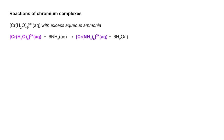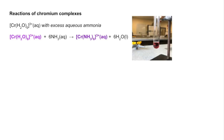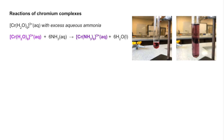The second reaction we'll look at is for a chromium complex — the hexa aqua chromium 3+ ion with an excess of aqueous ammonia. You can see from the equation that all six of the water ligands have been substituted by ammonia ligands. The hexa aqua chromium 3+ ion is violet in colour, and the hexa amine chromium 3+ is purple — so not much of a colour change.